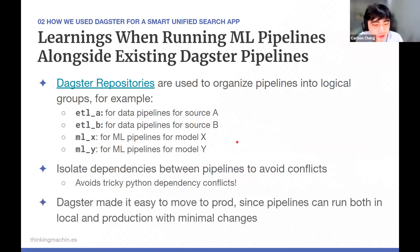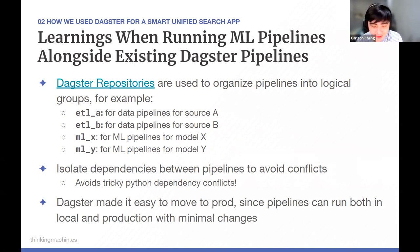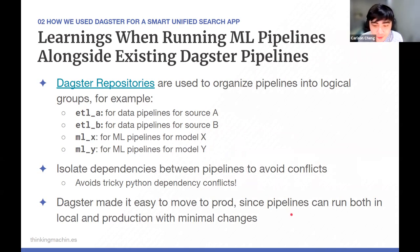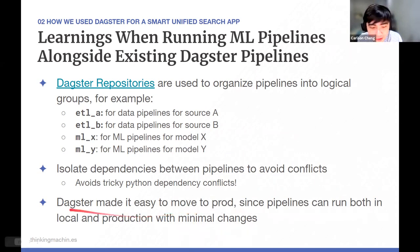An additional learning is that Dagster makes it very easy to move to production, since pipeline implementation is essentially the same whether you're running on a local machine or a Kubernetes production environment. There are minimal changes when moving pipelines to prod — most changes are at the high-level Dagster configuration level, and at the pipeline level you don't need to change much.